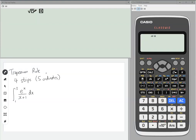Let's say we wanted to use the trapezium rule to estimate the integral between one and three of e to the x over x plus one using four strips or five ordinates.